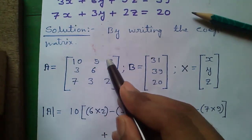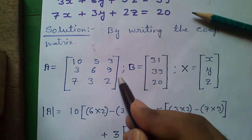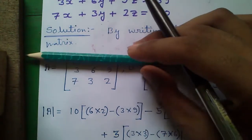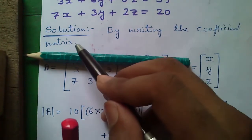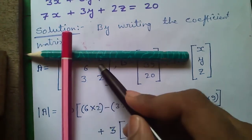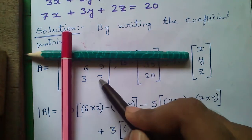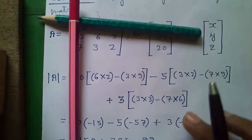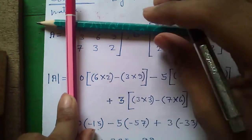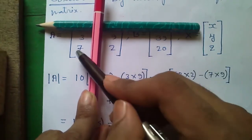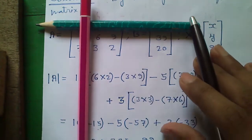The matrix has row 1, row 2, row 3 and column 1, column 2, column 3. For the value at row 1, column 1, we cover row 1 and column 1, leaving four numbers: 6×2 − 3×9 = 12−27 = −15. For row 1, column 2, we cover row 1 and column 2, leaving: 3×2 − 7×9 = 6−63 = −57. For row 1, column 3, we cover row 1 and column 3, leaving: 3×3 − 7×6 = 9−42 = −33.